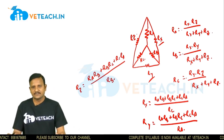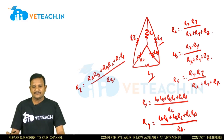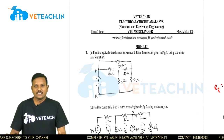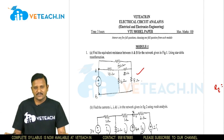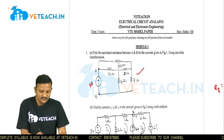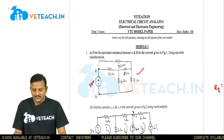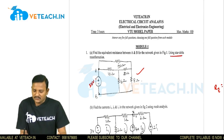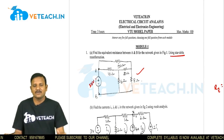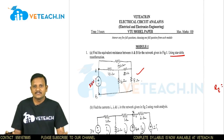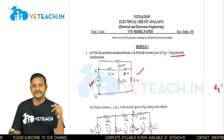Once you know the formulas, it is easy to simplify the given network. This is the given model paper. Generally for this type of question, they give some input voltage V and you have to calculate the source current. Here we are using star-to-delta transformation. Star-to-delta transformation means first you have to identify which elements are connected in star and which elements are connected in delta.